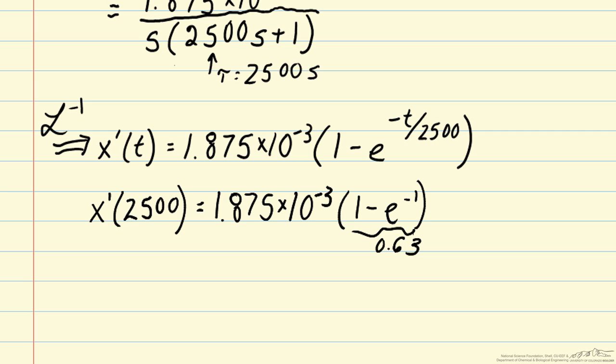And we can also sketch the time behavior of the system. And in fact, we can do that in terms of our original variable x, which is x bar plus x' of t, such that at time 0, we start at our original value 0.025, the steady state value.